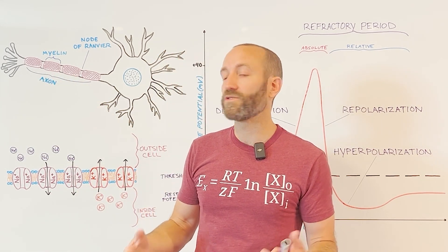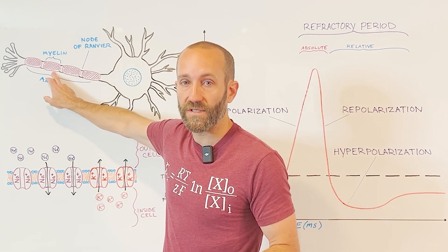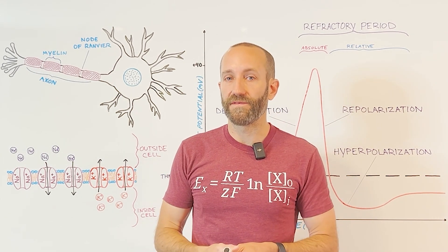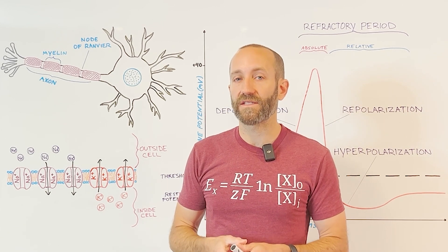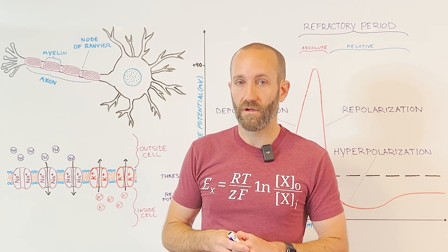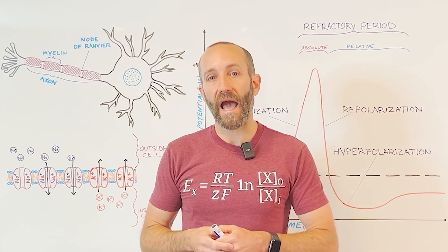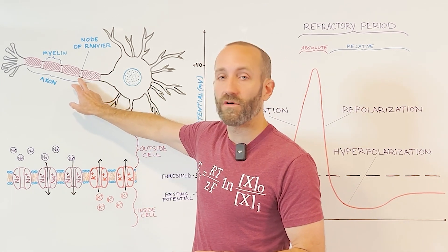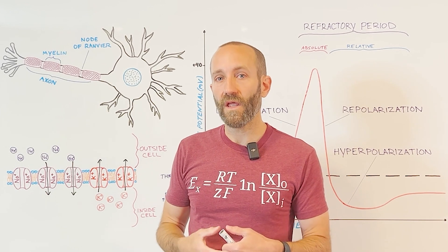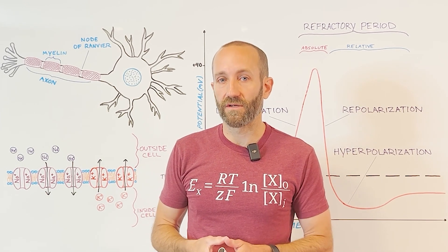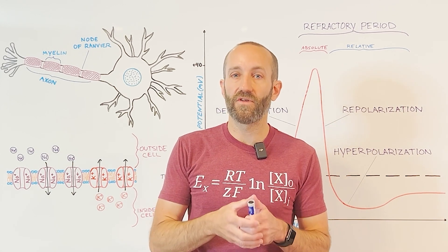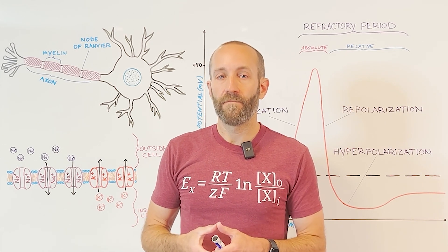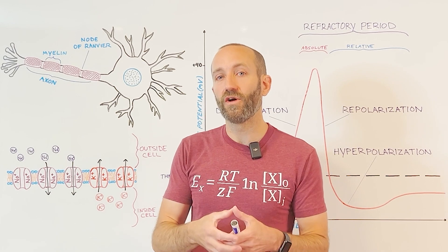Many of the axons in the nervous system are also covered in an insulating material called myelin, represented by this stripe structure here. Myelin is a lipid-rich material that's wrapped around the axons of neurons, and it makes the propagation of action potentials down the axon faster and more efficient. One way it does this is by preventing current from leaking out of the axon, but the main way myelin increases speed of propagation is that it's interrupted by areas called nodes of Ranvier, where there are gaps in the myelin. The nodes of Ranvier are rich in voltage-gated sodium channels, so when a depolarizing action potential reaches a node of Ranvier, it causes another inrushing of sodium and a regeneration of the action potential.